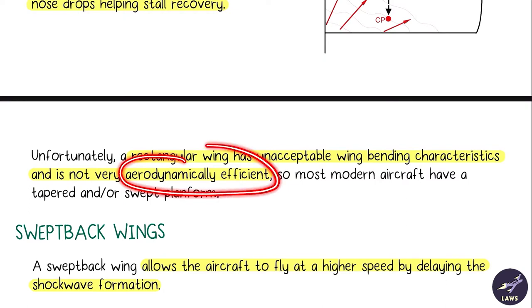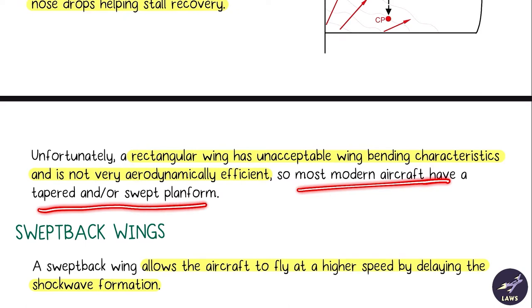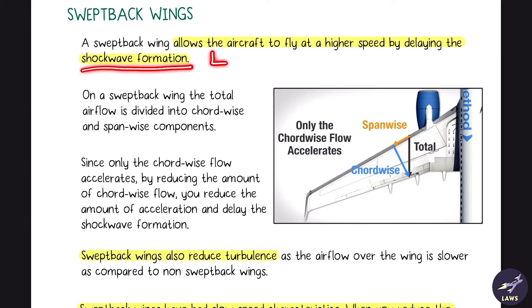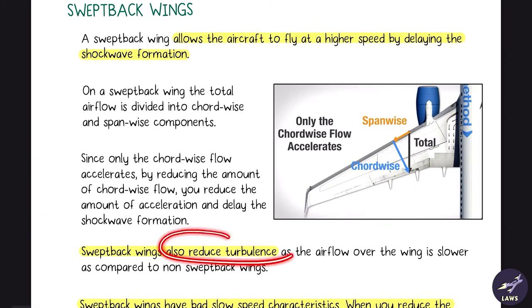Swept-back wings have two main advantages. First, they allow the aircraft to fly at higher speed by delaying shock wave formation. When the shock wave forms, lift reduces and drag increases, which is undesirable. Second, swept-back wings reduce turbulence. We'll look at exactly how this works.